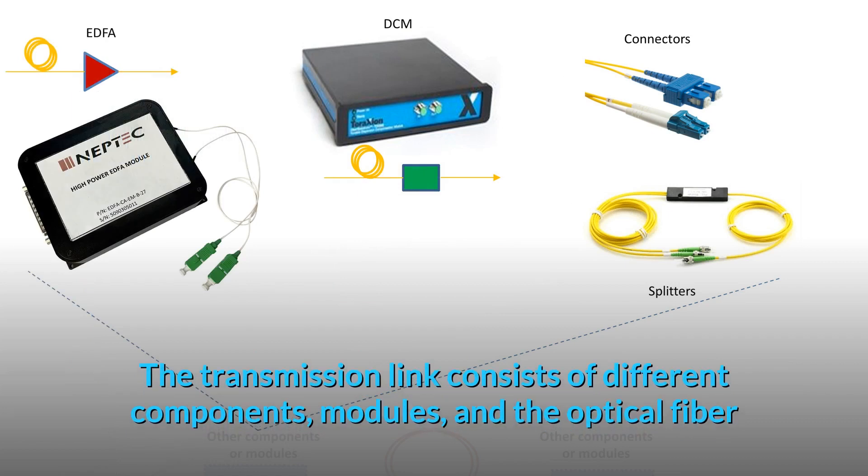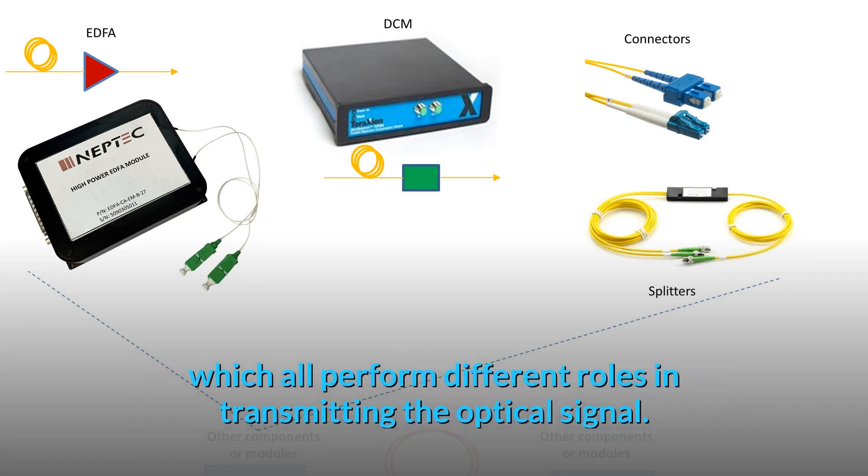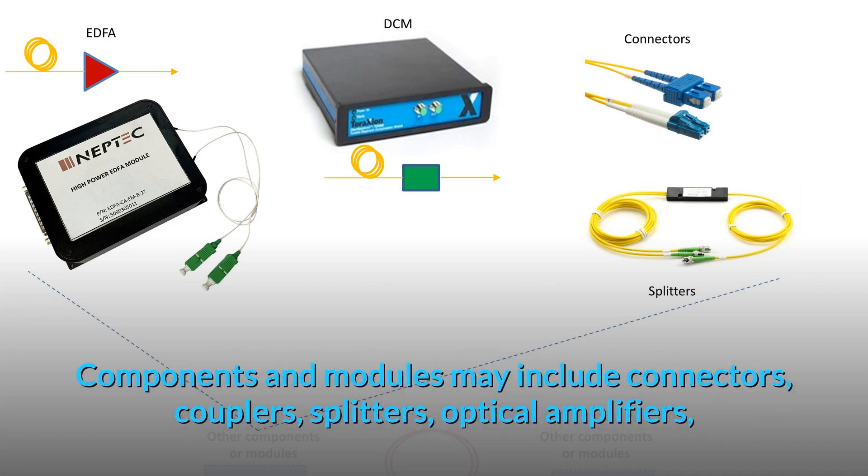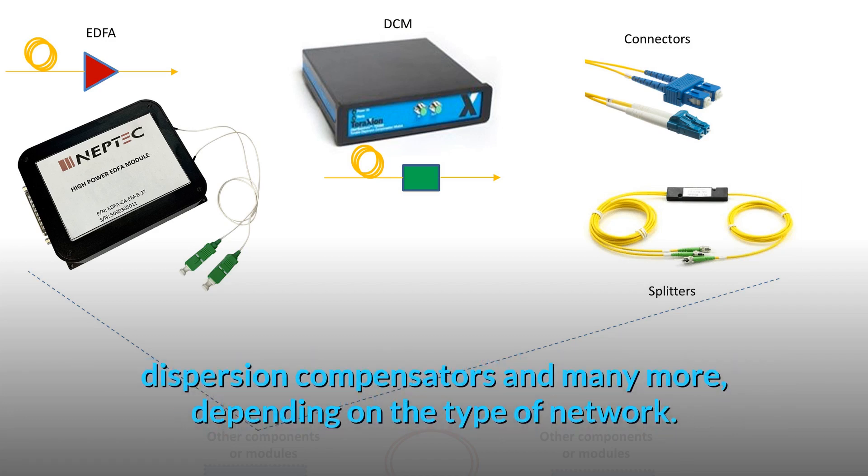The transmission link consists of different components, modules, and the optical fiber, which all perform different roles in transmitting the optical signal. Components and modules may include connectors, couplers, splitters, optical amplifiers, dispersion compensators, and many more, depending on the type of network.